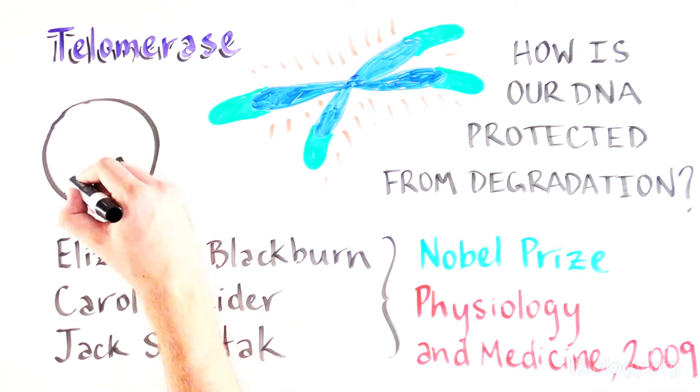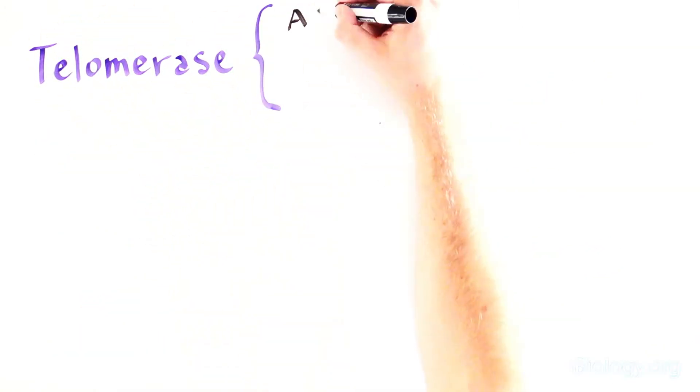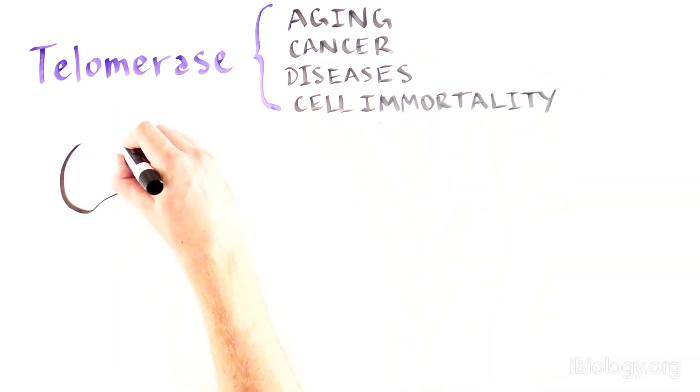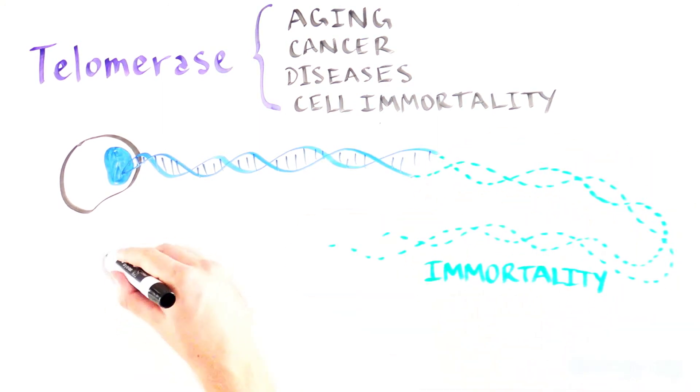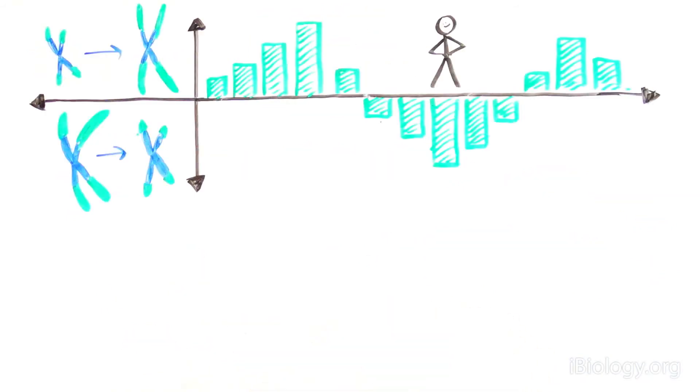Telomerase was discovered by scientists interested in learning more about our own biology. Since the discovery of telomerase, we now know that this enzyme plays many important roles in aging and diseases such as cancer. By extending chromosomes, telomerase can make some cells immortal, and cancer cells use this enzyme to divide essentially indefinitely. It's captivating to learn that we live our lives between states of telomere extension and shortening, and this has important implications for our biology.